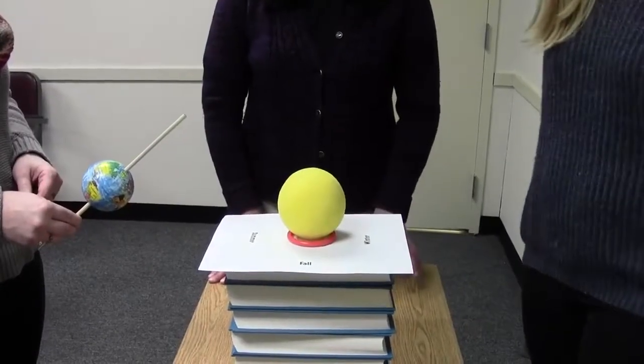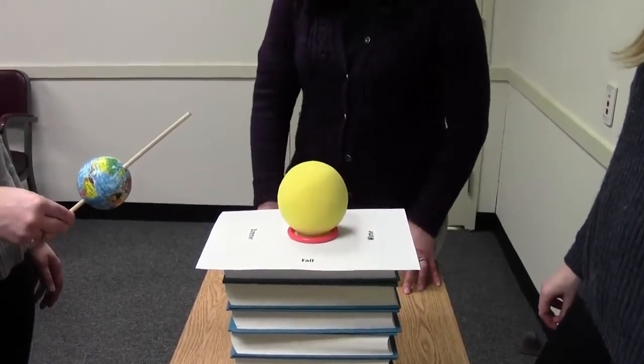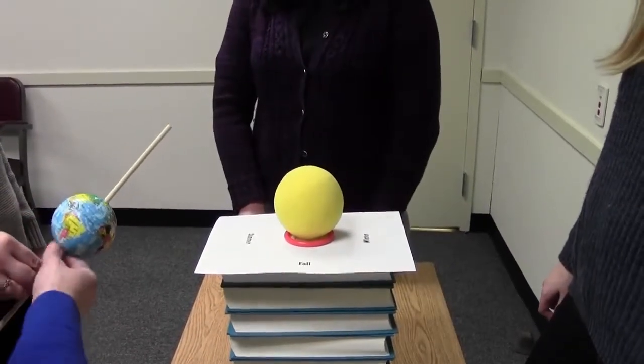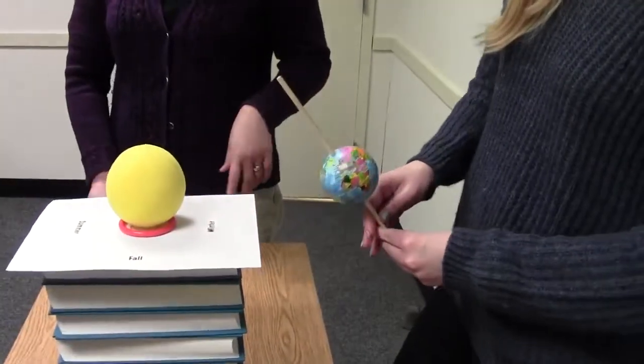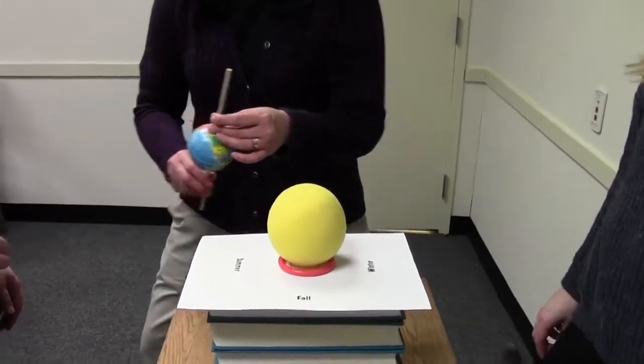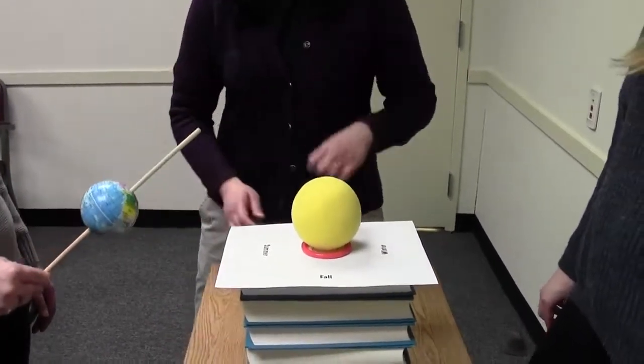We're just going to quickly go through the common things that students do incorrectly when they're running this model. Usually the most common thing we see is that students have the axis of the Earth tilt drift or they don't change it at all, they're always pointing it towards the Sun.